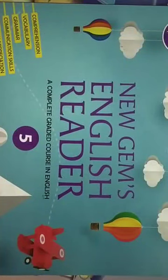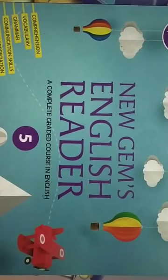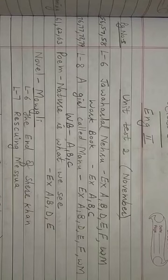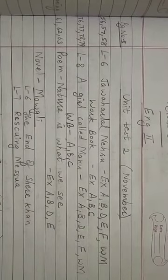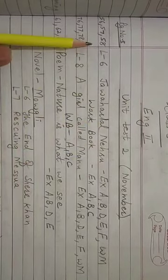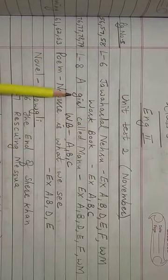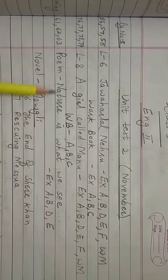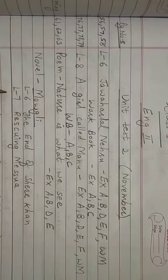Good morning students. In this video, I will start with your second UT syllabus of your English 2 syllabus. Your English 2 syllabus for the second UT is lesson number 6, Jawaharlal Nehru; lesson 8, A Girl Called Manu; poem, Nature Is What We See; and novel, Mowgli.